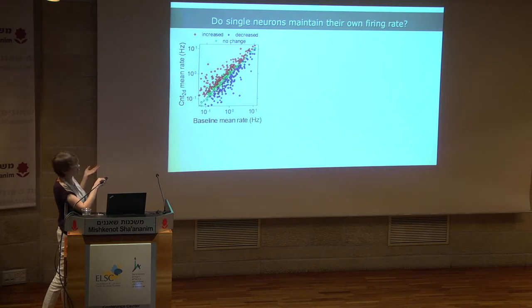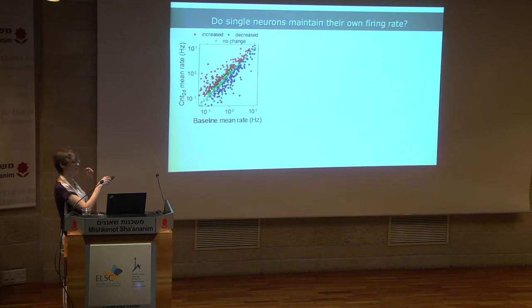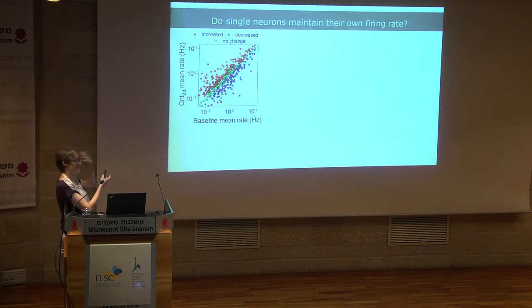Blue spots are neurons that statistically significantly decreased their firing rate, red spots are neurons that increased, and only green spots were stable. You can see a nice overall correlation — neurons that fire strongly still fire at high rates — but there are statistically significant differences over two days at the individual neuron level.